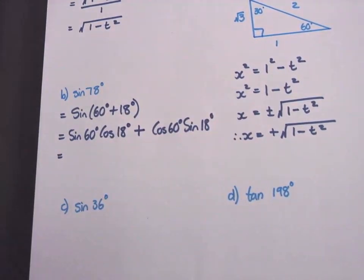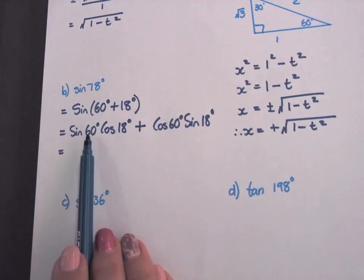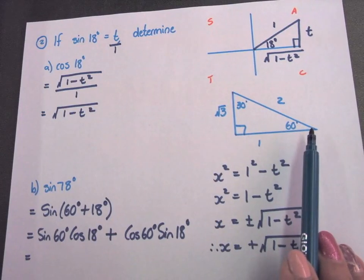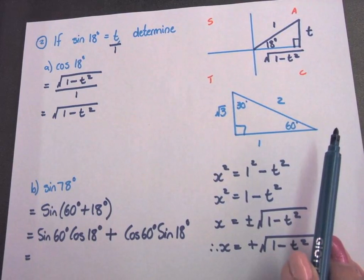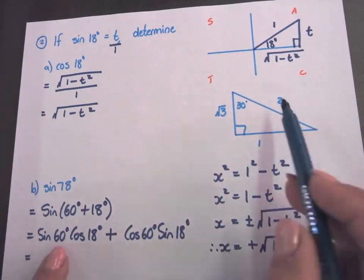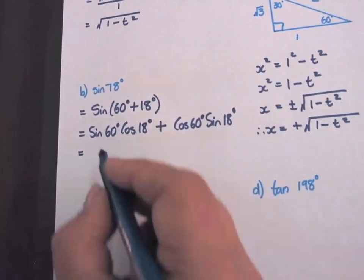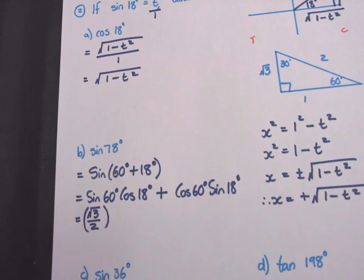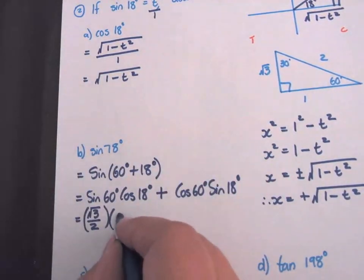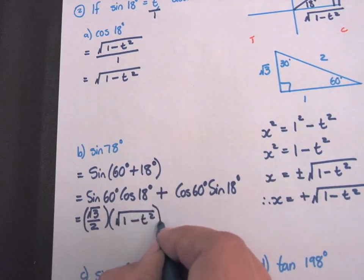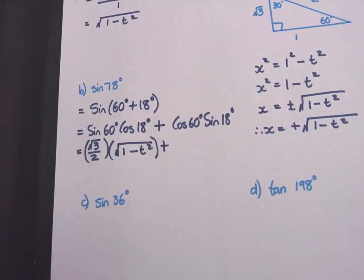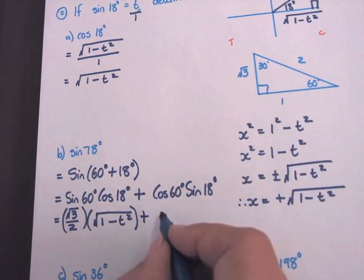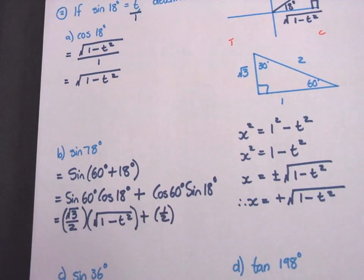And now you substitute. I've got a special angle, 60 degrees. So you need to draw that special triangle with the 60 degrees in it. You're not allowed to use your calculator. So sine of 60 will be square root 3 over 2. Cos 18 we calculated in number A. So it will be square root of 1 minus T squared plus. Cos 60 degrees, it will be adjacent over hypotenuse, that's a half. And sine 18 is T.